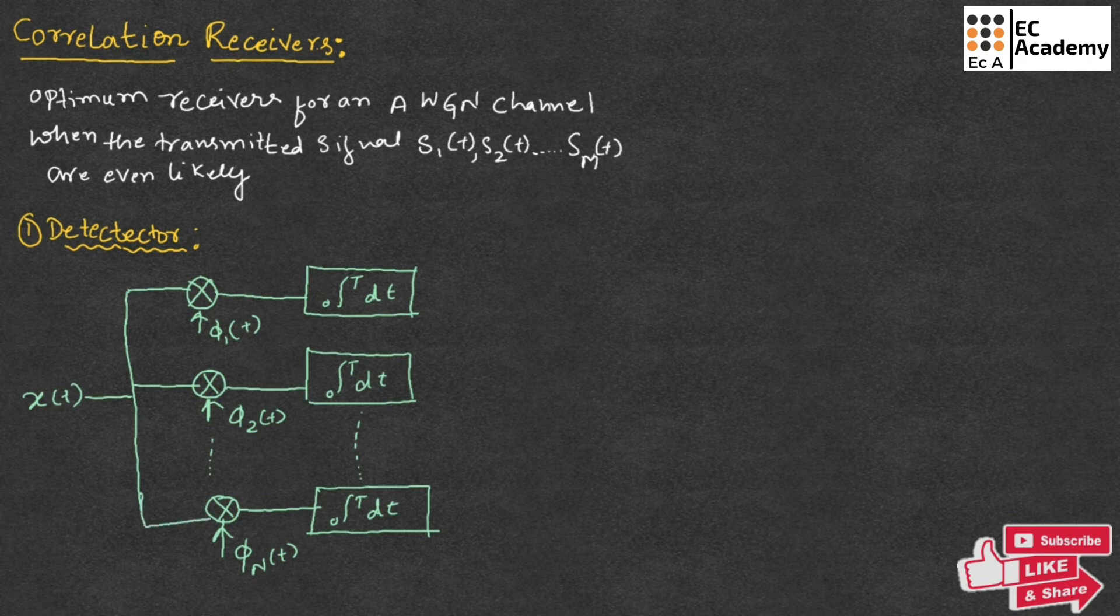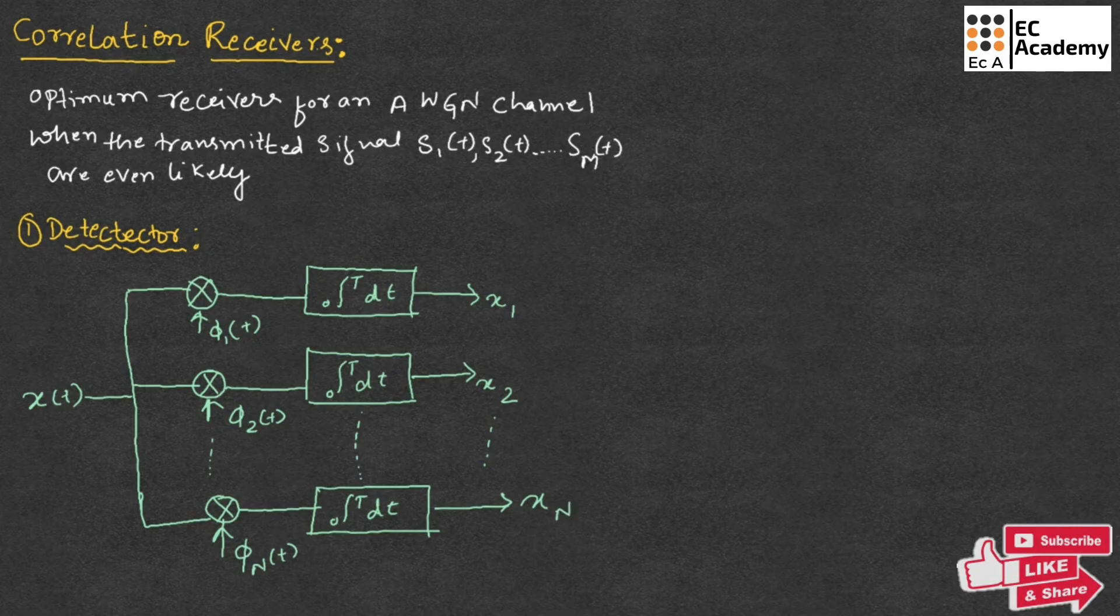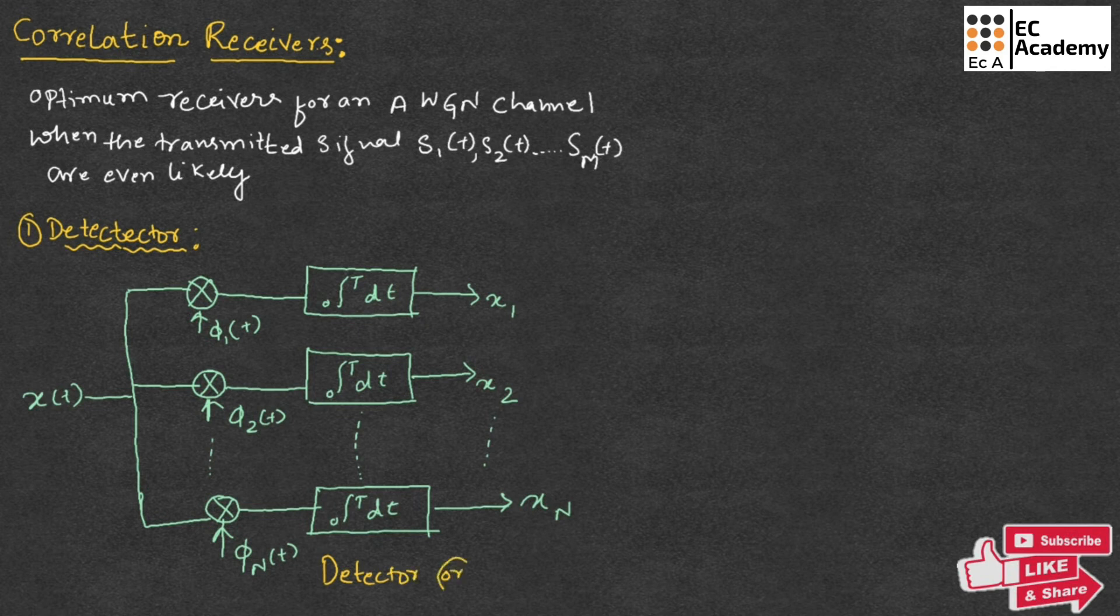And they will produce the observation vector X. So output of this will be X1. Output of second function will be X2. Likewise, we will get output as XN. So this diagram shows a detector or it is also known as modulator.